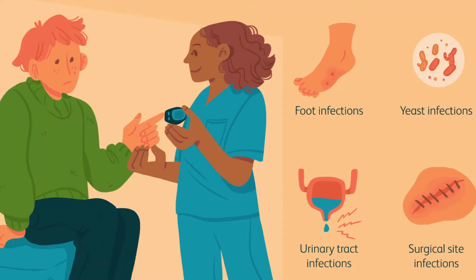The exact cause of most types of diabetes is unknown. In all cases, sugar builds up in the bloodstream because the pancreas doesn't produce enough insulin. Both type 1 and type 2 diabetes may be caused by a combination of genetic or environmental factors, though it is unclear what those factors may be.